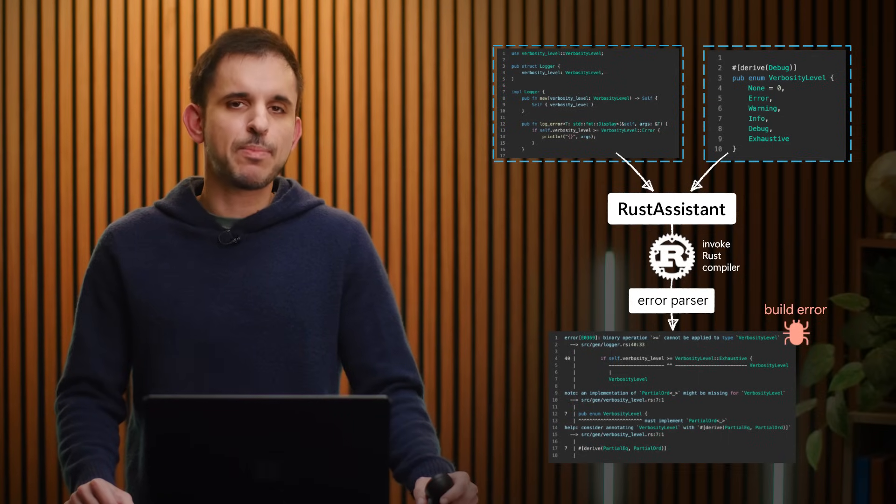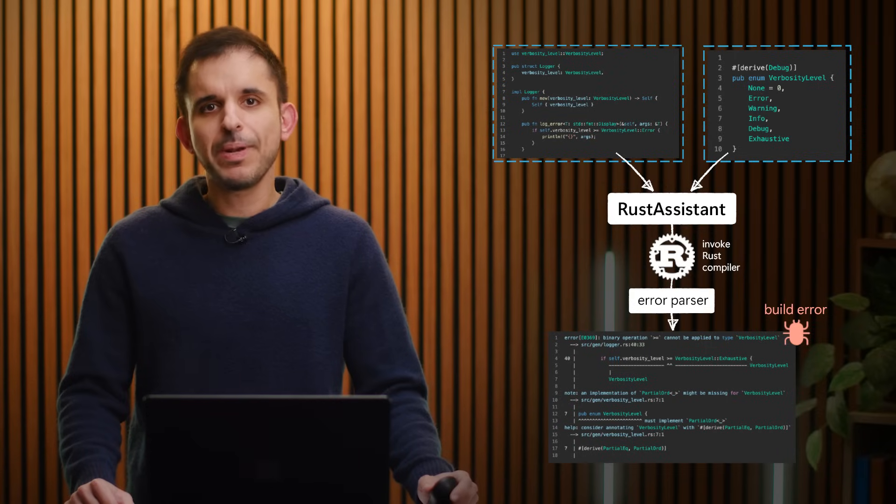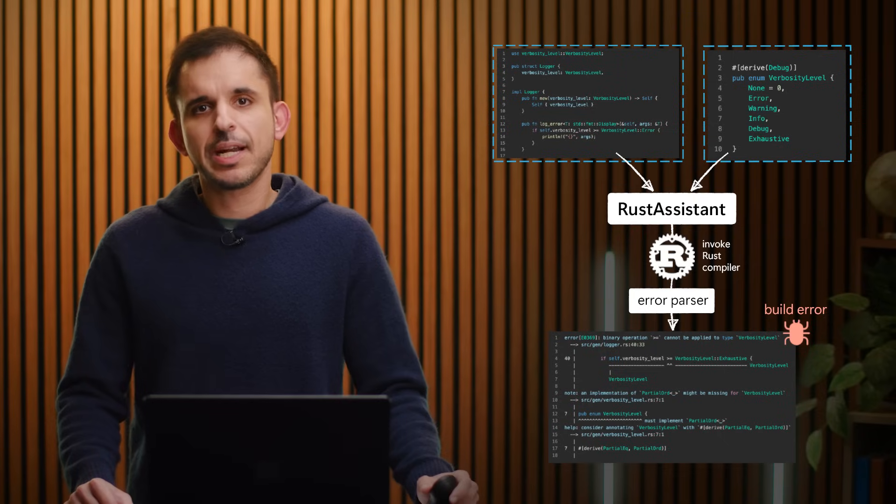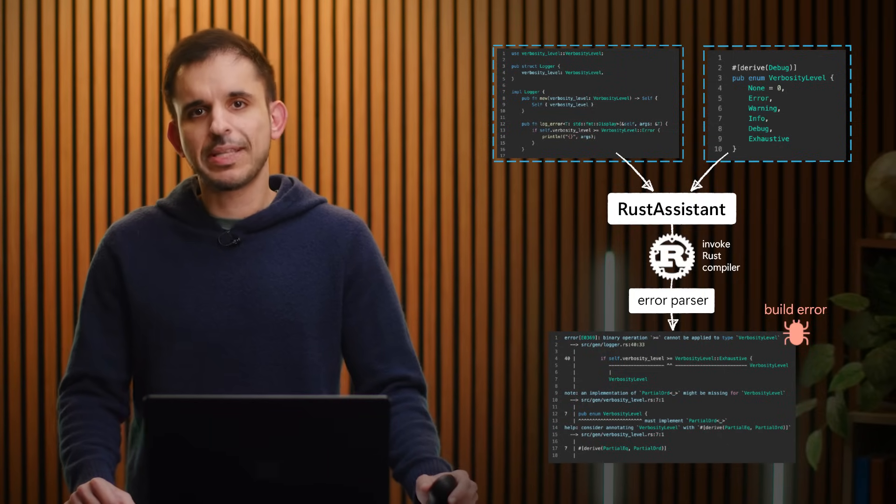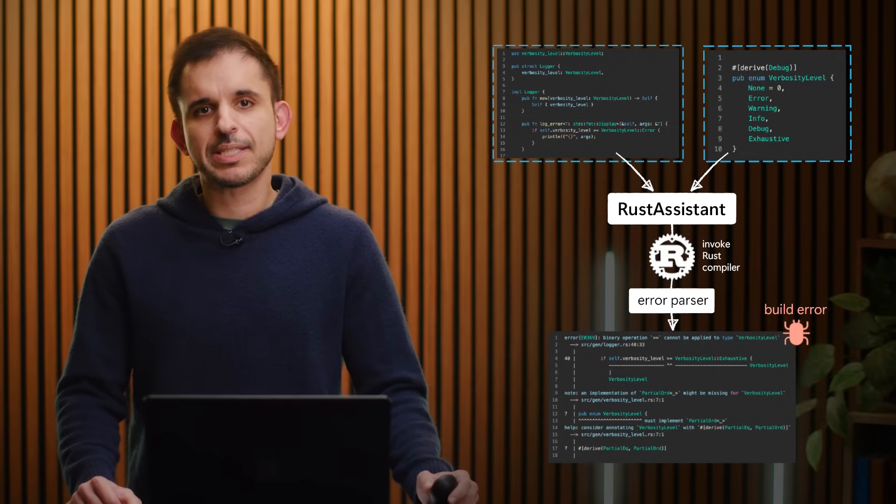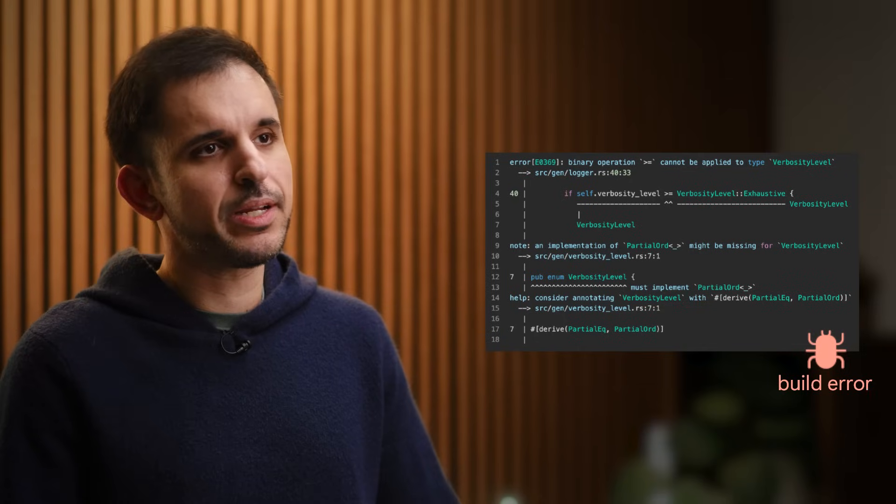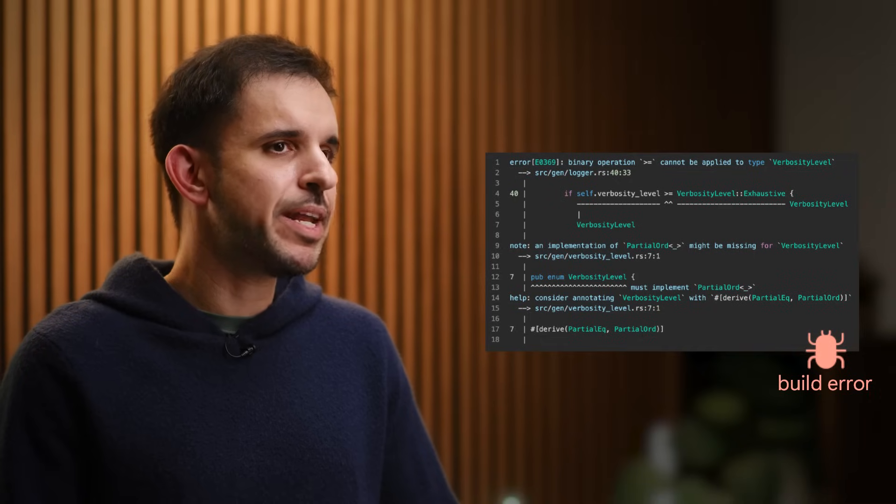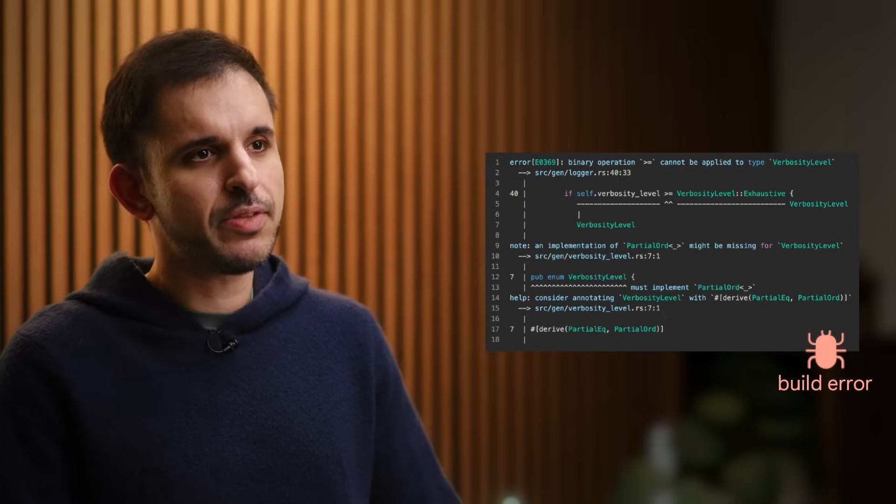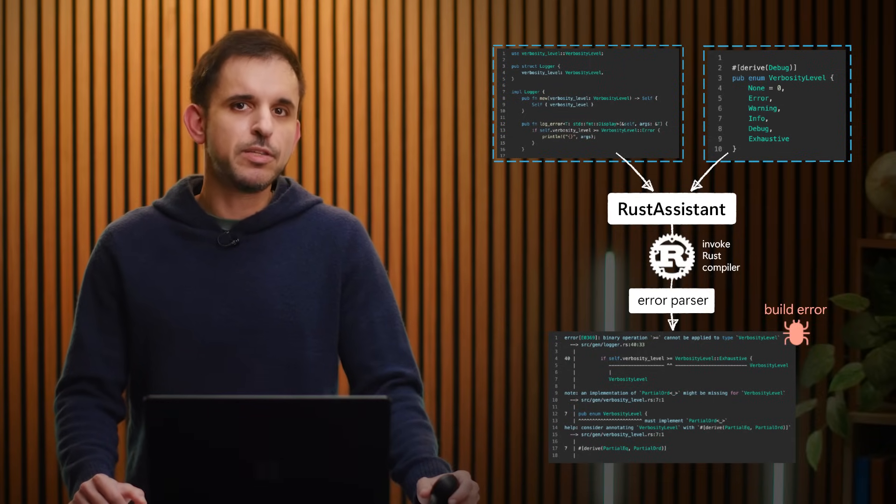Okay, let's now see how Rust Assistant works step by step. Let's begin with the first step, building the code and parsing the build errors. Such errors can range from simple syntax mistakes to very complicated issues involving traits, lifetime, or ownership rules in Rust code spread across multiple files. So when a developer writes Rust code that doesn't compile, the Rust compiler generates detailed error messages that include the error code, the location of the error, as well as documentation and examples related to this error code. To illustrate this process, let's look at the very simple example on the screen. In this case, the developer is trying to compare a custom verbosity level enumeration on their code using the greater or equal operator. However, the Rust compiler throws an error stating that this binary operation cannot be applied to verbosity level. The compiler suggests that the reason behind this error is because verbosity level does not implement a trait that is required for performing such comparisons in Rust. This detailed error message is precisely what Rust Assistant captures at this step, preparing it for the next stage of processing.